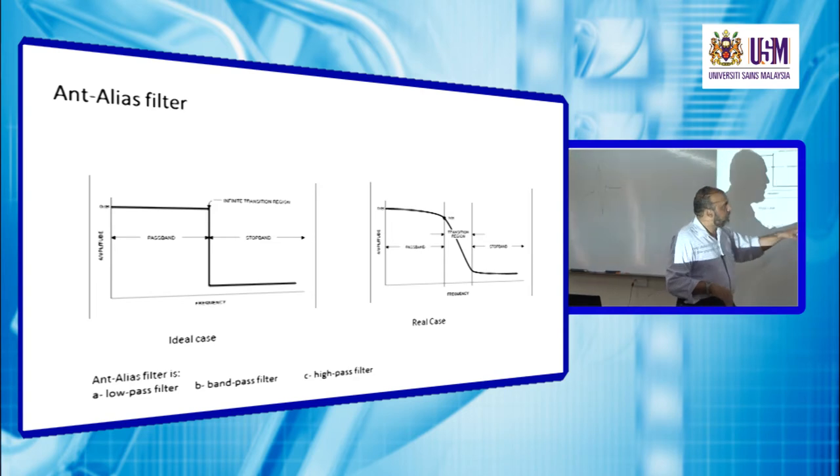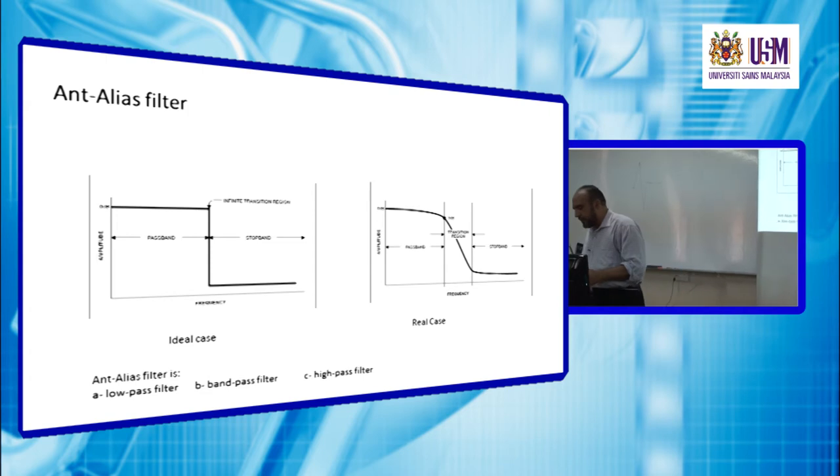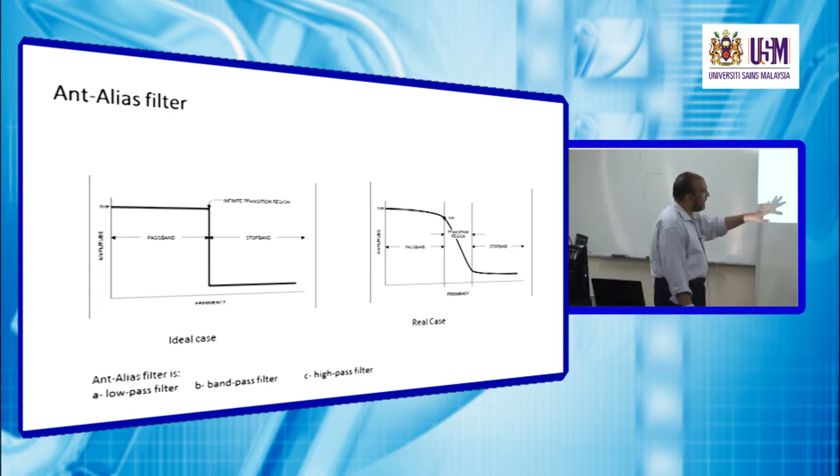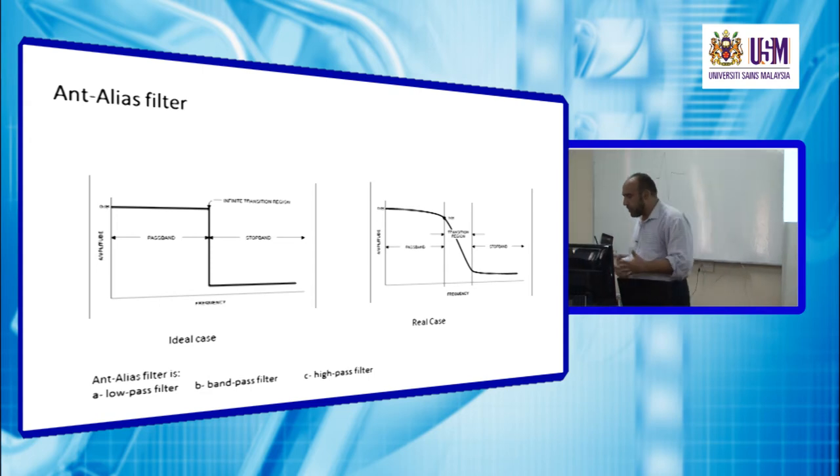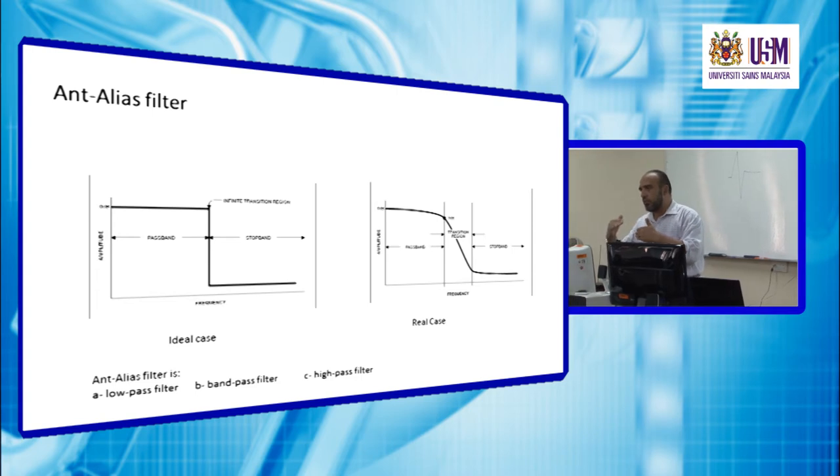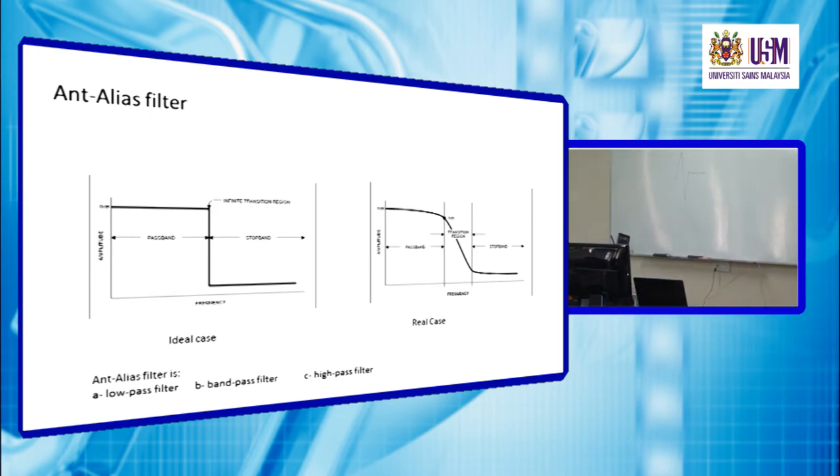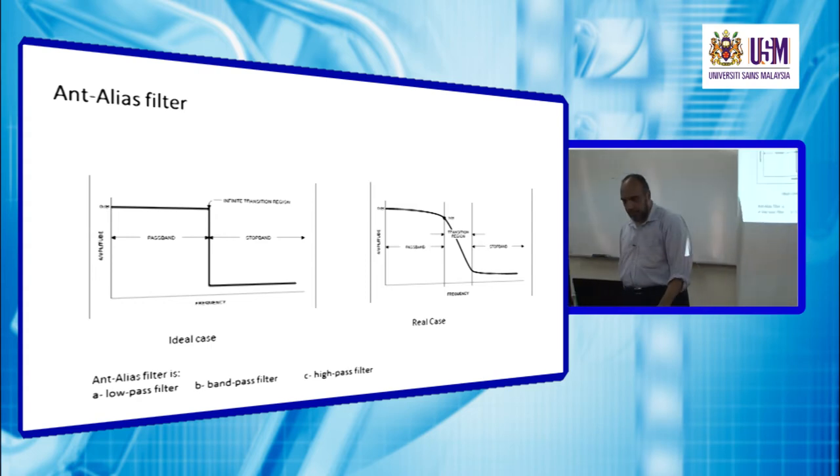In this case, it doesn't mean that if we're going to have 100 samples per second, we should use 50 Hertz, because this is the ideal case that we cannot achieve. We should give some limit so that we increase the sample rate so that we have this zone for removing or reducing the amplitude of unwanted signal.